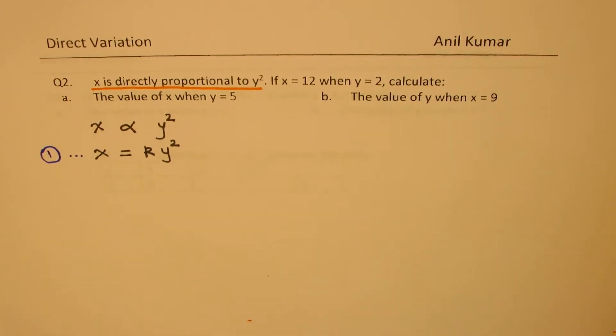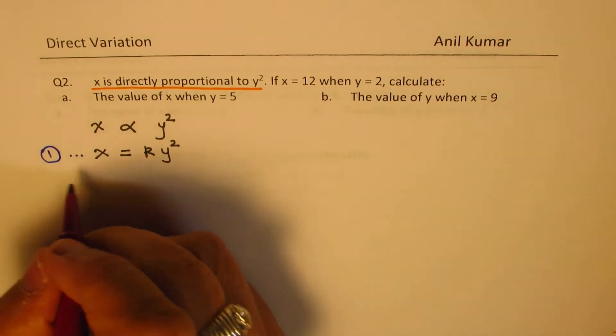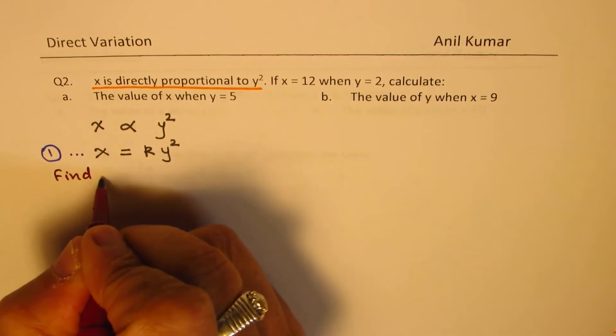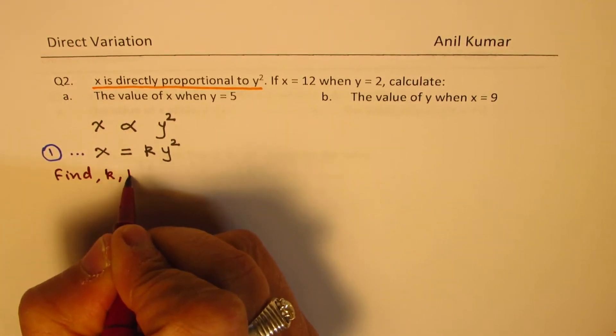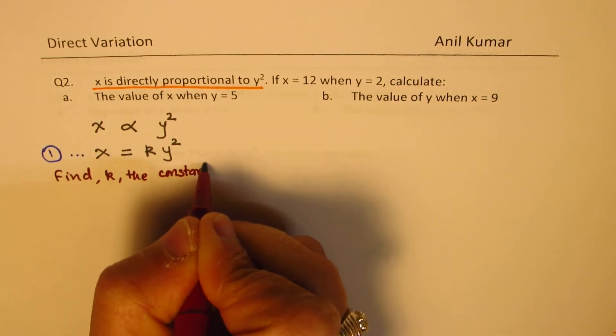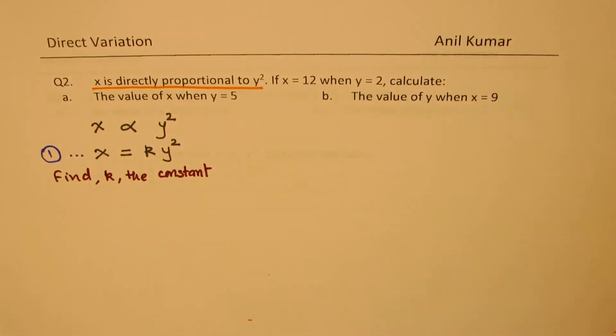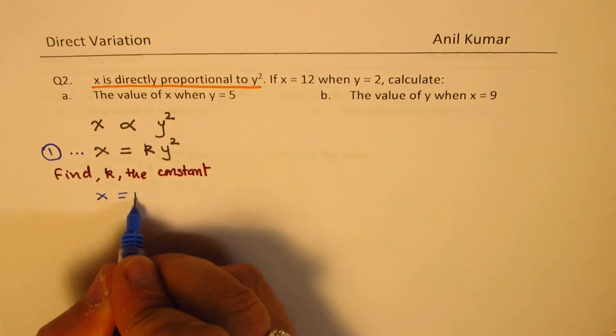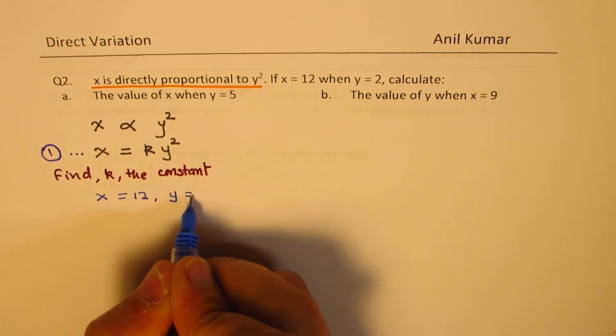Now to solve an equation based on variation, we need to find the value of k, the constant of variation. To find the value of k, we will use the information given to us, which is at x equals to 12, y equals to 2.